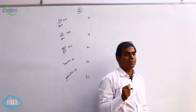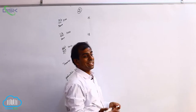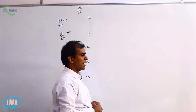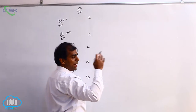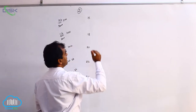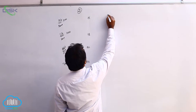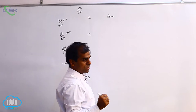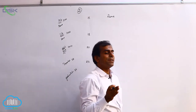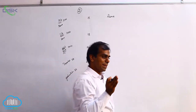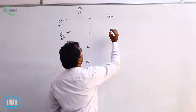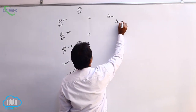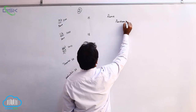Why is it purchase returns? Because previously we purchased these goods, and now we are returning them back to the person from whom we purchased — that is Rama. Goods are going out, so we call them purchase returns. The two accounts affected here are Rama account and purchase returns account.